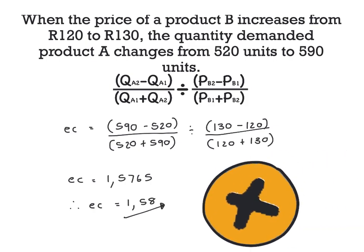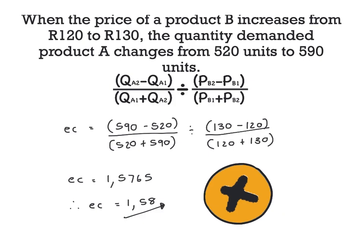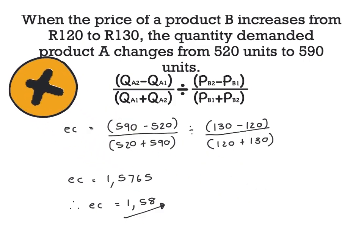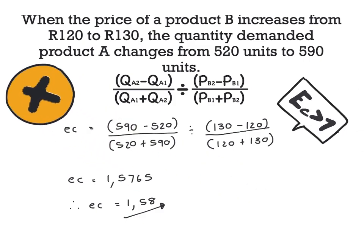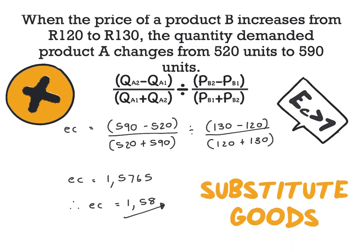EC is therefore equal to 1.5765, and our final answer is equal to 1.58. In the case that we obtain a positive cross-price elasticity value, this means that we are dealing with substitute goods. That concludes our video for today — hope to see you next time.